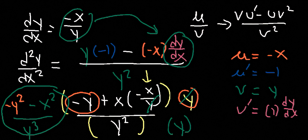That's how you can find the second derivative. That's it for this video. Hopefully this gave you better insight on how to find the derivative using implicit differentiation.